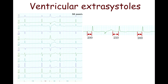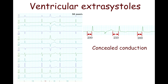This is explained by the phenomenon of concealed conduction. There is retrograde conduction of the ventricular extrasystole to the atrioventricular node, but the impulse cannot pass it and spread to the atria. However, it depolarizes the inferior portion of the atrioventricular node. When the next impulse from the atria passes the atrioventricular node with some delay, it is because the lower portion of the atrioventricular node is in a relative refractory period. This is seen on ECG as a prolonged PR interval.